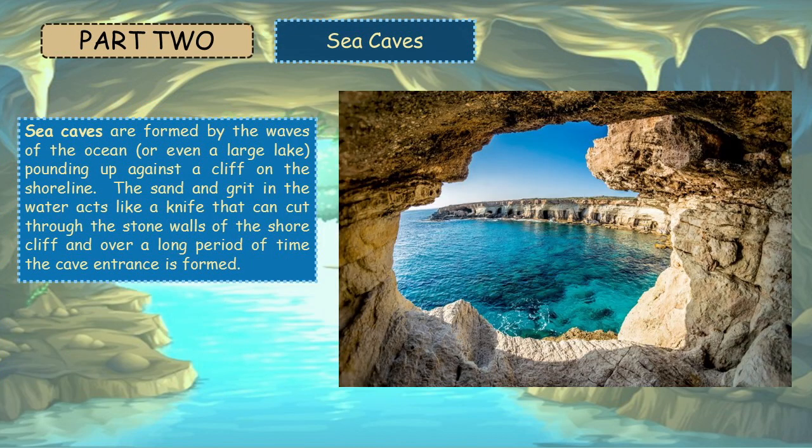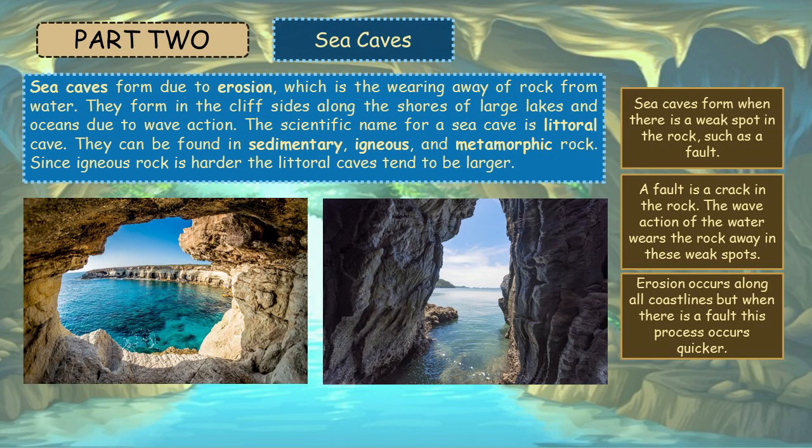Sea caves are formed by the waves of the ocean or even a large lake pounding up against a cliff on the shoreline. The sand and grit in the water acts like a knife that can cut through the stone walls of the shore cliff, and over a long period of time the cave entrance is formed. Sea caves form due to erosion, which is the wearing away of rock from water. They form in the cliff sides along the shores of large lakes and oceans due to wave action.